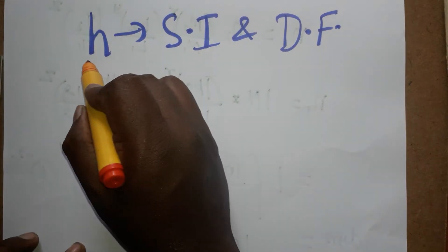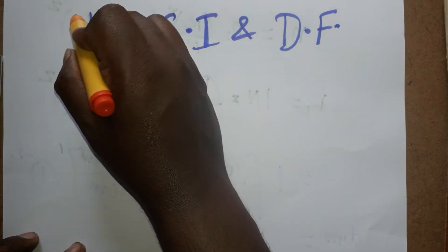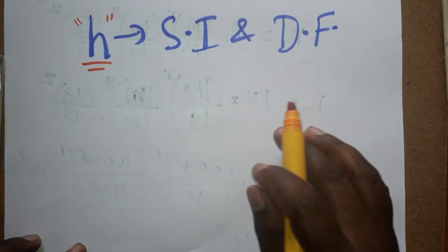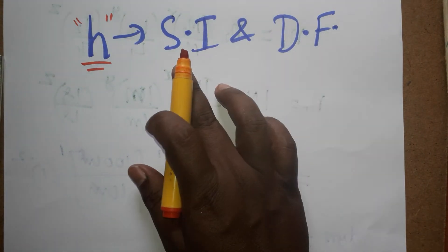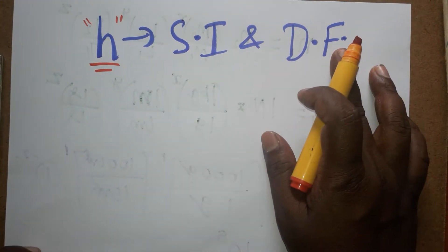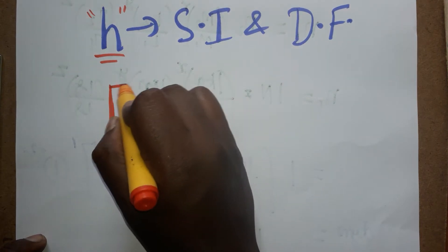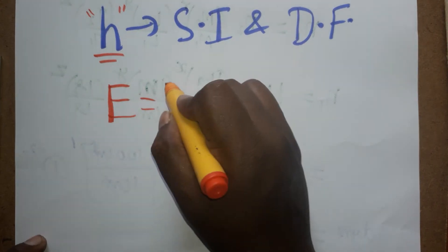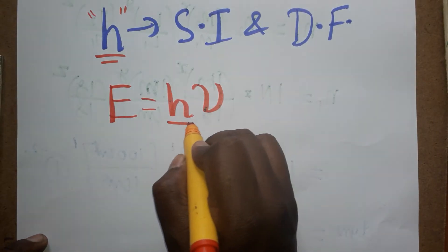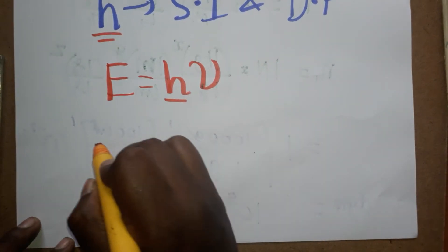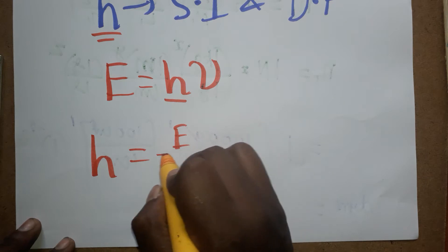Today we are going to learn the Planck constant SI unit and dimensional formula. As we know, energy is equal to Planck constant times frequency. So Planck constant is equal to energy divided by frequency.